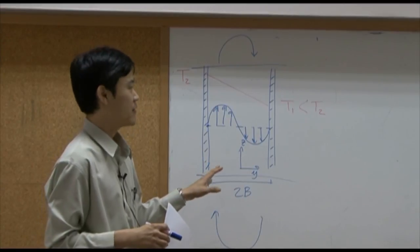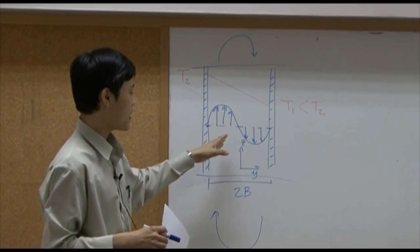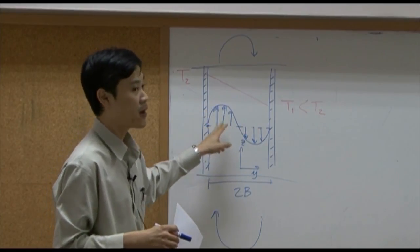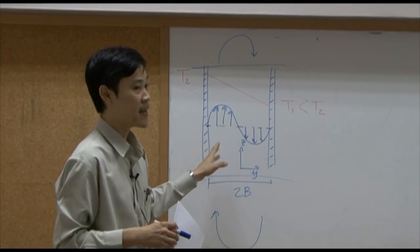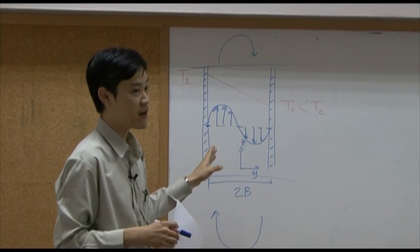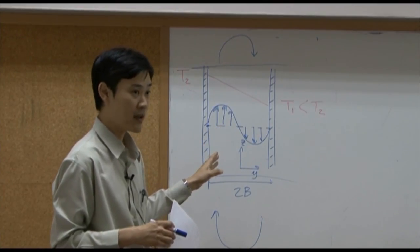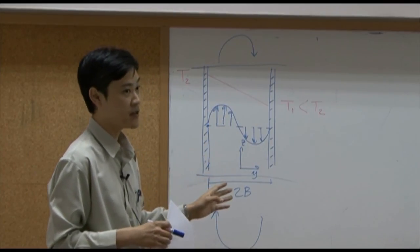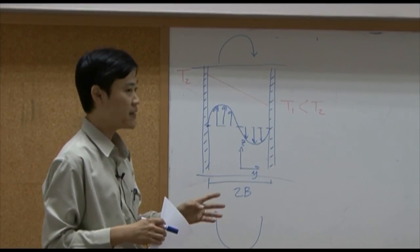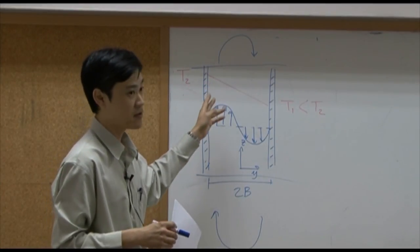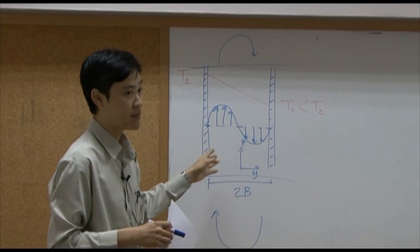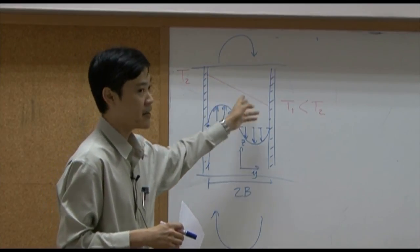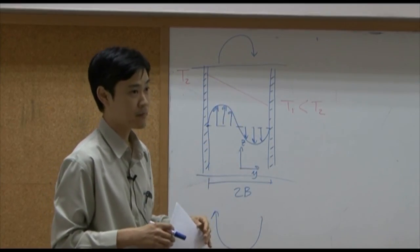But here, there is no way that you can find the velocity profile under assumption that density and viscosity is constant. Because right now, the fluid movement is solely due to the difference in density. And difference in density is function of temperature. So if you consider this problem, you need to start by finding temperature profile first.